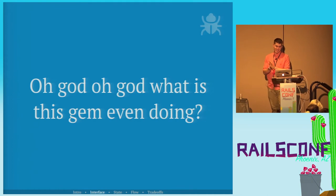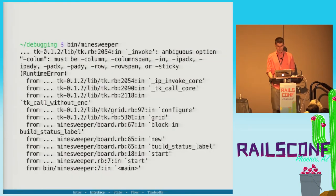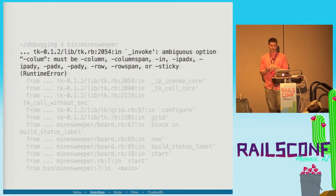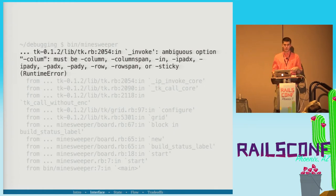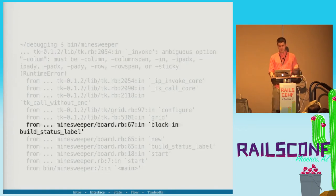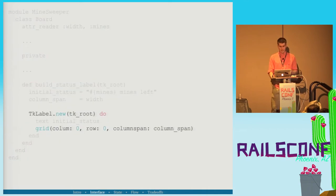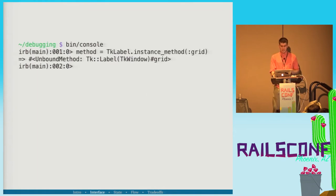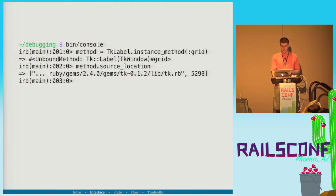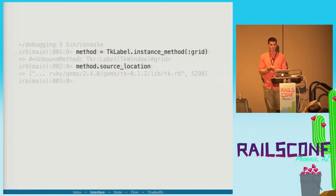My favorite: 'oh god, what is this gem even doing?' Let's say we get 'ambiguous option column.' We can go to the code from our side or from the vendor gem side. We find the line we control, which calls the tk-label grid method. So from the command line we get that TK method grid and call source_location on it.